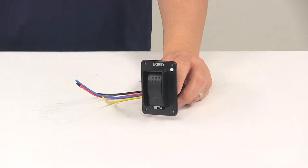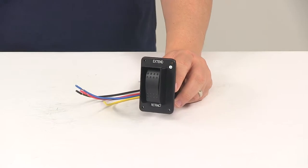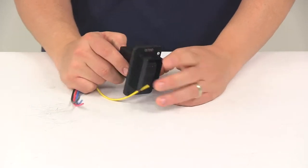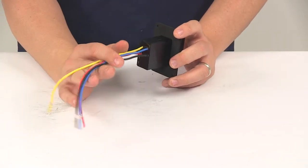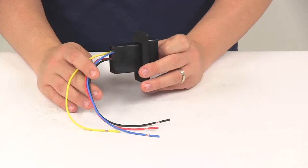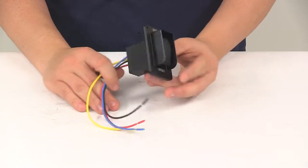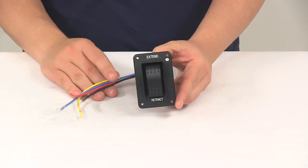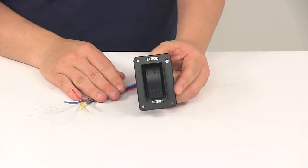Today we're going to be taking a look at the replacement electric jack switch with harness for Lippert components high-speed stabilizer jacks. This is going to replace the extend retract switch for your Lippert electric stabilizer jack part number LC 363284.